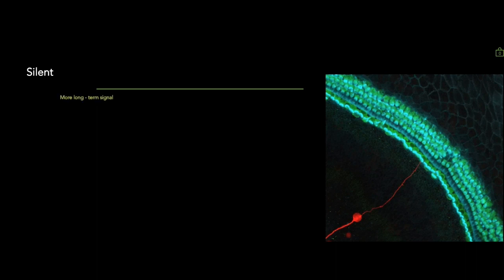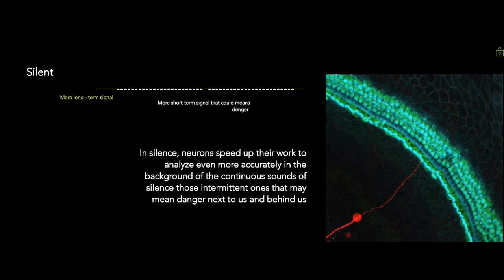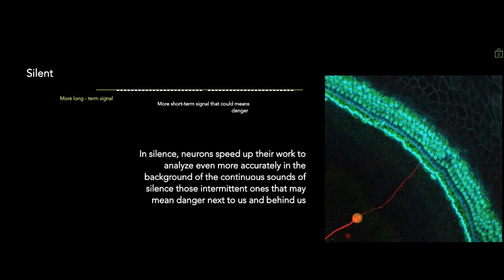Sudden silence means more constant signals in the form of low-level background noise, against which an intermittent signal — also quiet — could mean danger. Just as in darkness, so in silence, the auditory pathway system accelerates the speed of neurons to better and more accurately analyze short-term signals which could mean danger against the background of monotonous, constant, long-term signals of silence.